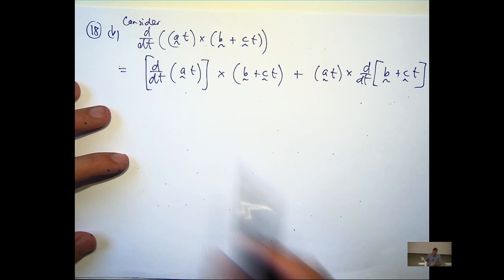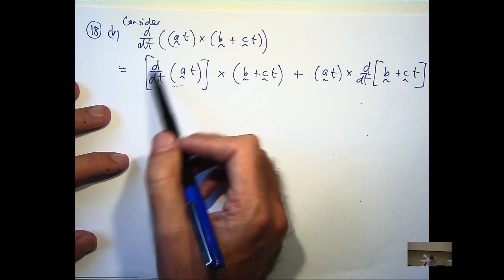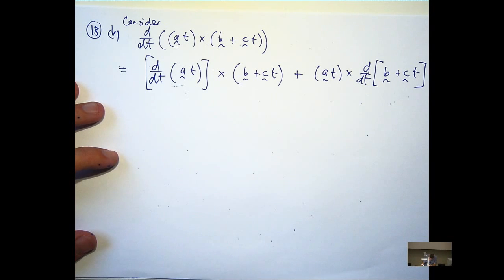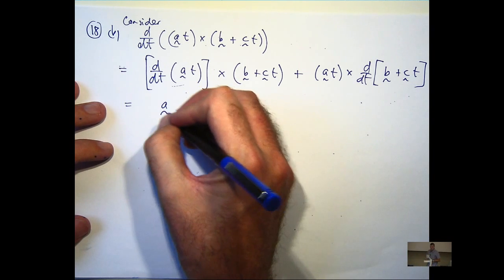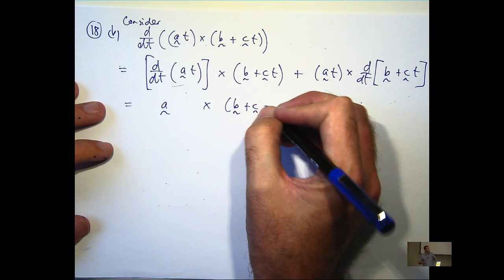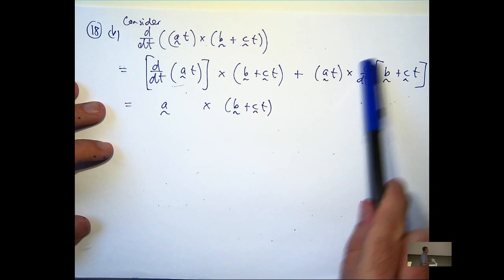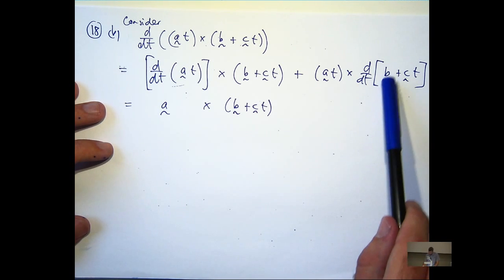Okay, so if we differentiate this with respect to t, what are we going to get? Right, just the vector a. And if I differentiate over here, what am I going to get? Well, I differentiate a constant, that's going to go to zero. Differentiate that, I'm going to get c.